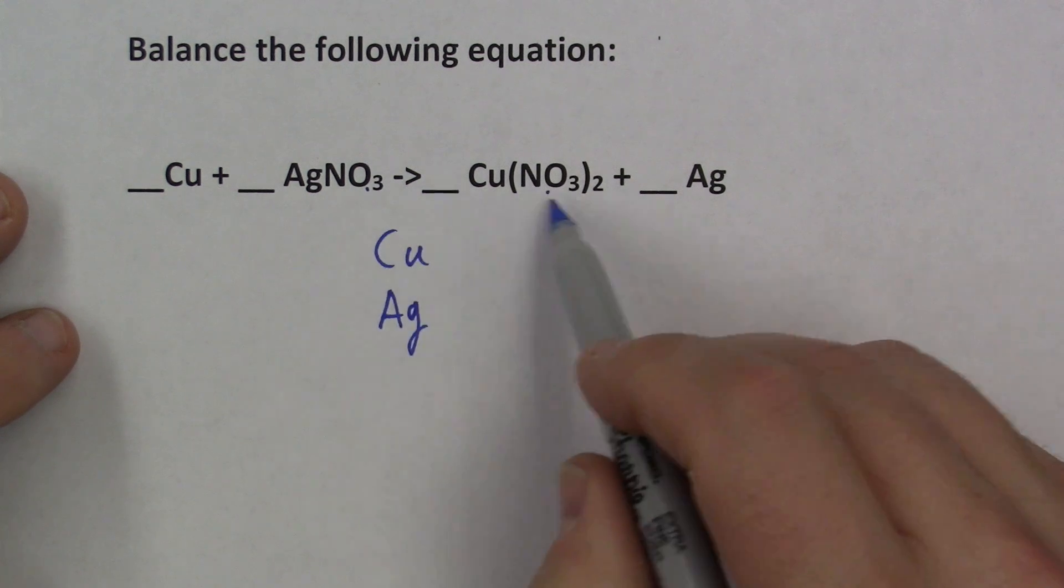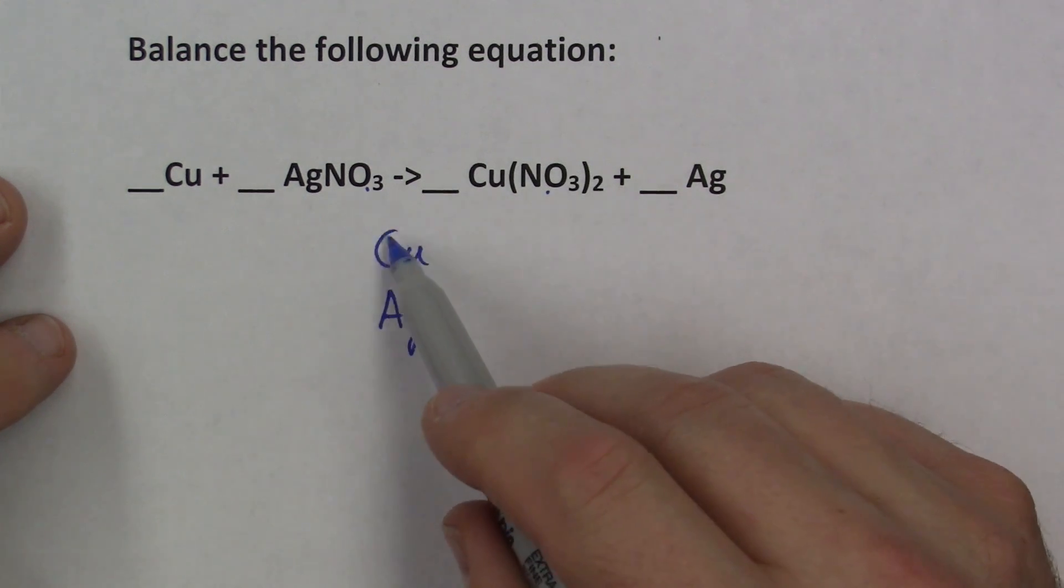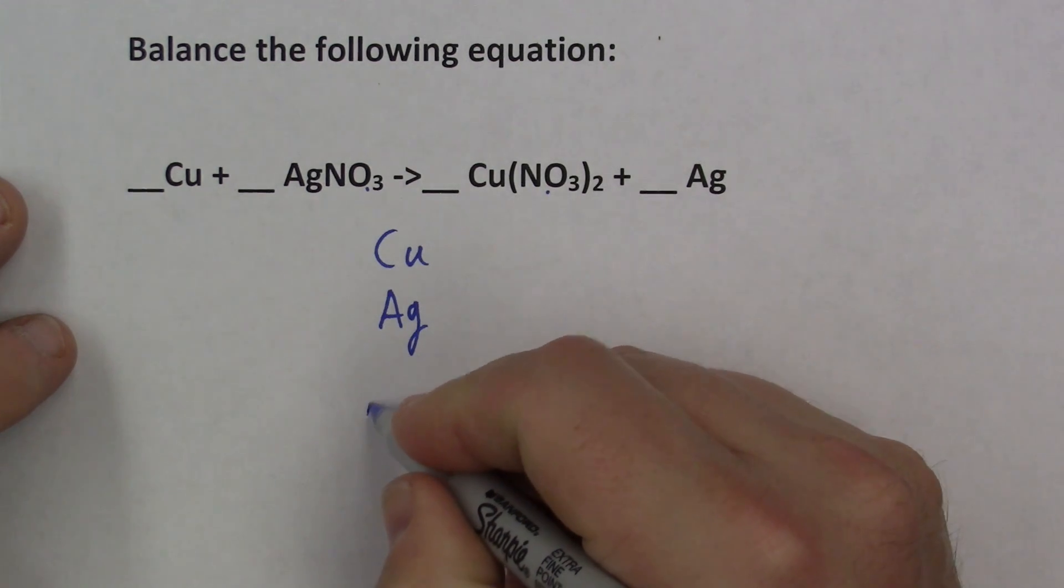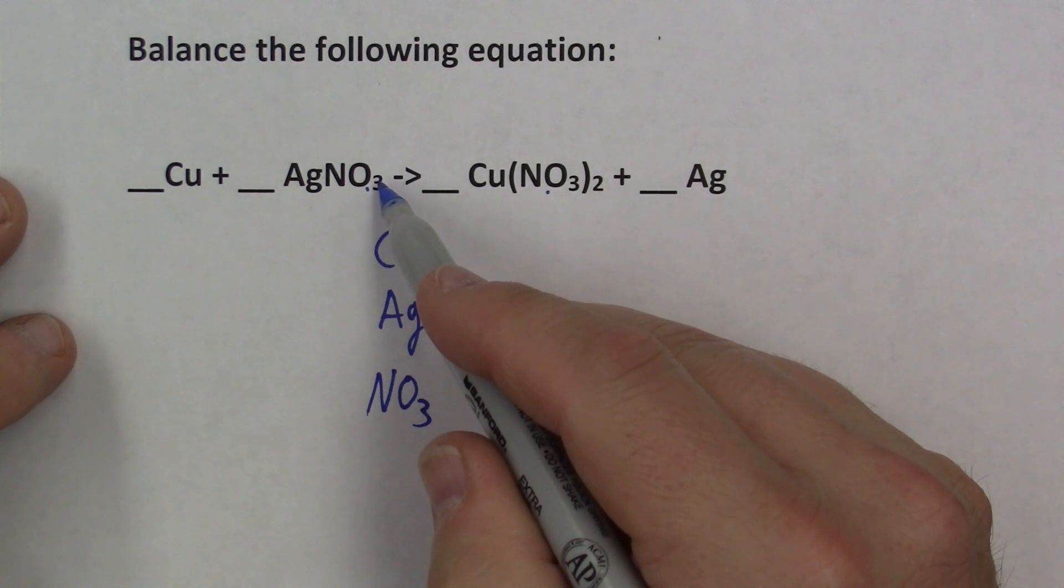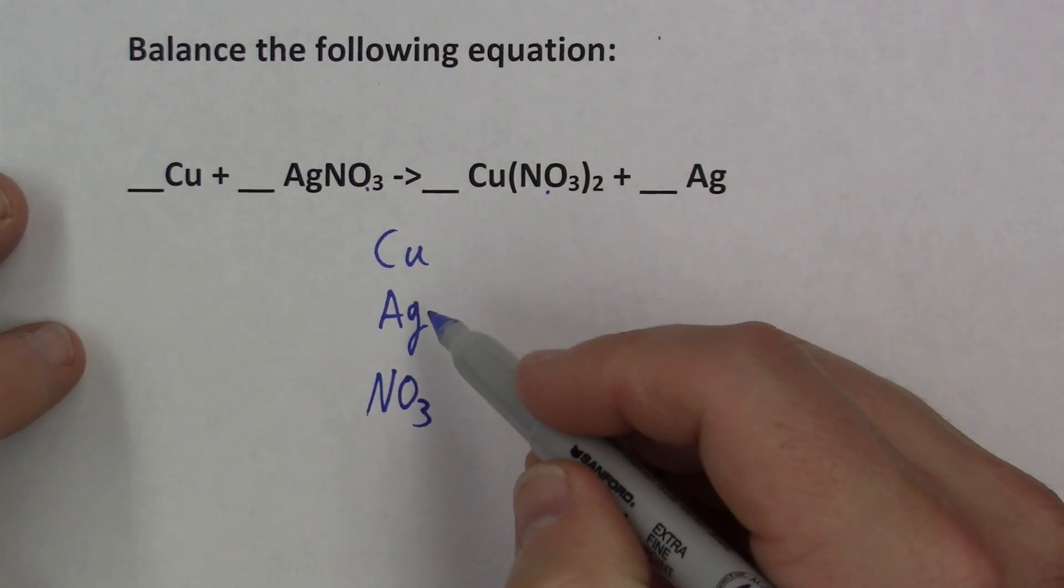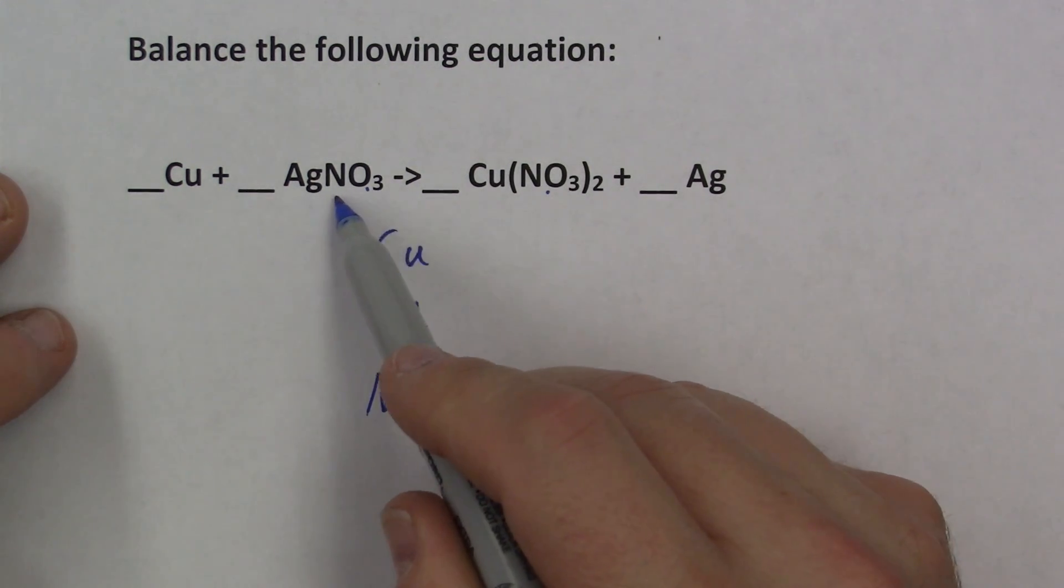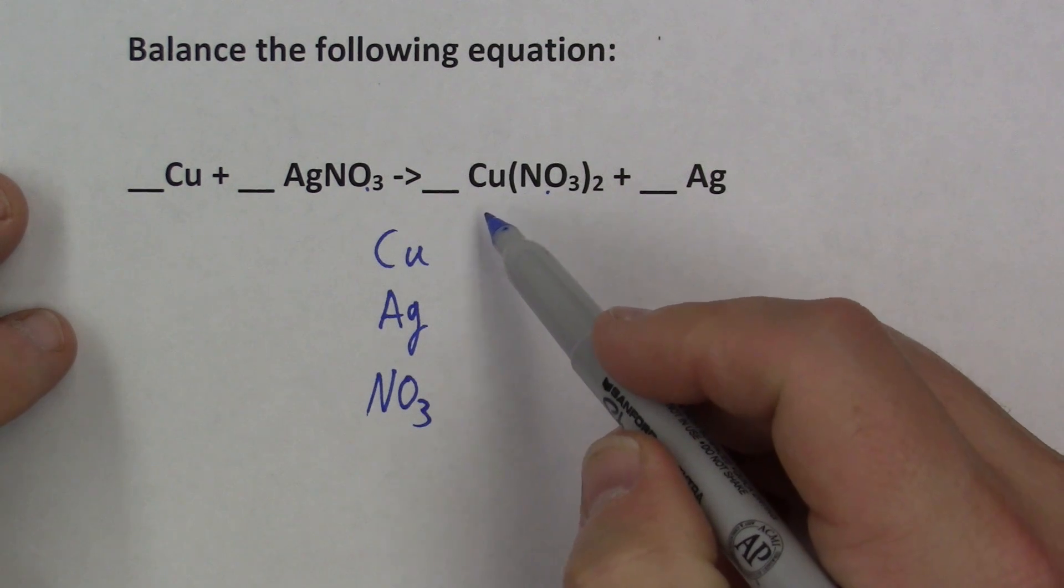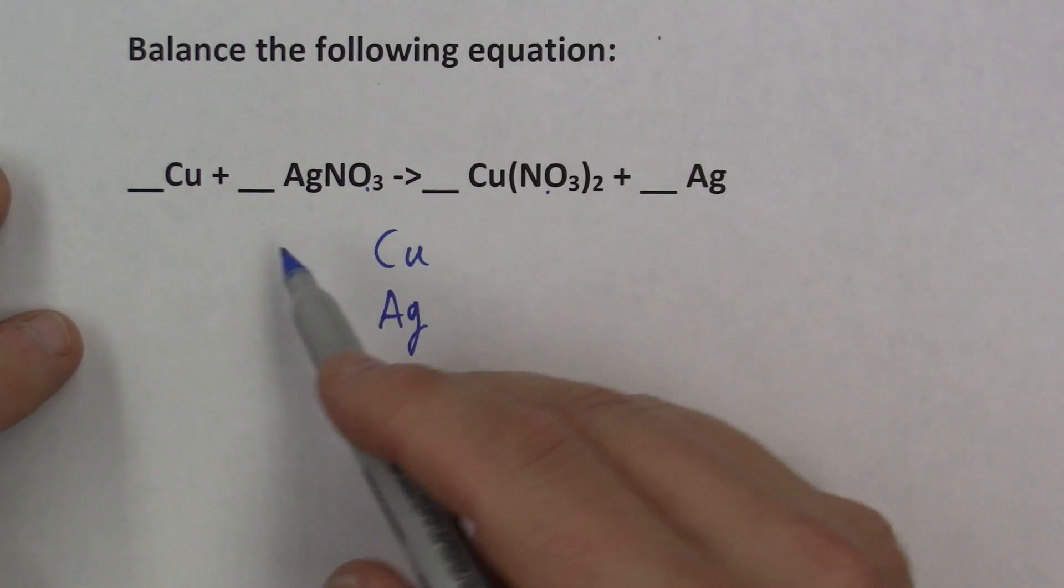NO3 here, NO3 there. That makes balancing this equation a little bit easier, because now we don't have to break the nitrogen away from the oxygens. We can leave them all together. So let's just say NO3. We're going to leave this as a unit. We're not going to break it apart into its representative elements. And we can do this because NO3 is here, and NO3 also occurs on the other side of the arrow, meaning it doesn't get used or destroyed in the reaction.